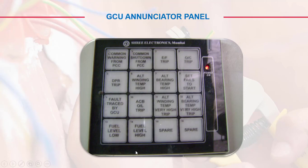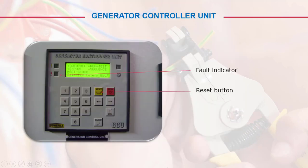The GCU annunciator panel makes fault finding easy — all readings are displayed there. The Generator Control Unit, or GCU, has fault indicators and a reset button. For any controller, you can go to the manufacturer's website to get the user manual and service manual. Study them and prepare your own SOP so that in an emergency, your team can tackle it easily.